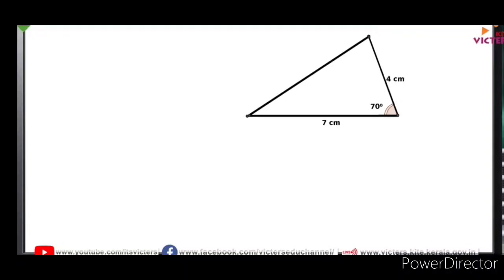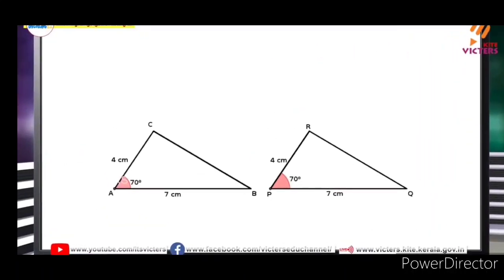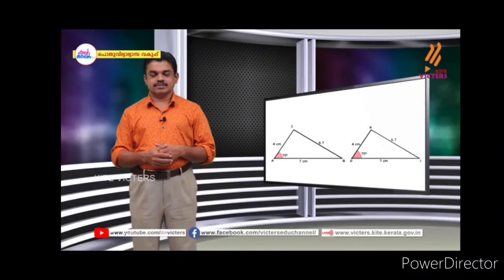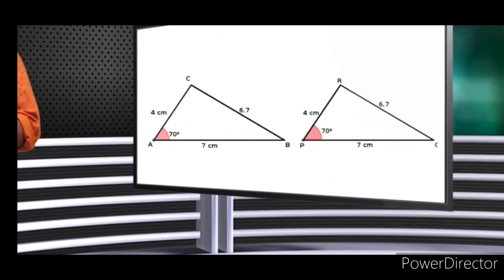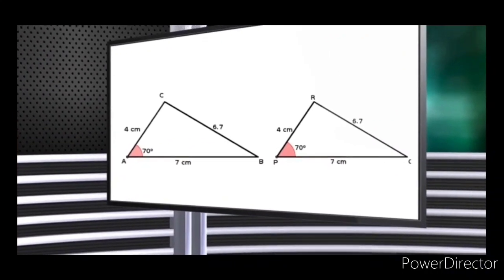We can select a type of triangle to construct one side. We will create one side of the triangle. The two triangles are ABC and PQR. For example, AC = 4cm, PR = 4cm, AB = 7cm, BC = 7cm, so BC is 1.7cm.